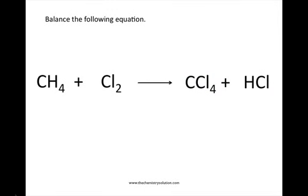Let's take a look at an example and try balancing this equation. Before we start, we're going to want to take an inventory of how many of each type of atom are on each side of our reaction arrow. On the reactant side, we have one carbon atom, four hydrogen atoms, and two chlorine atoms.